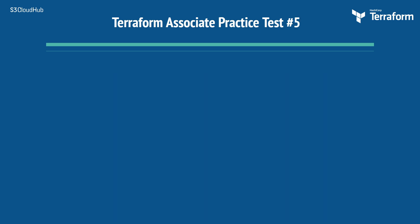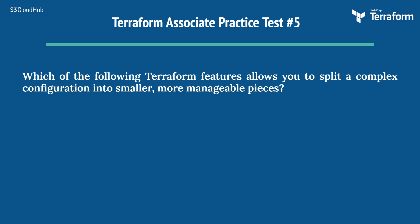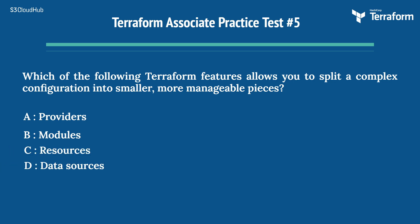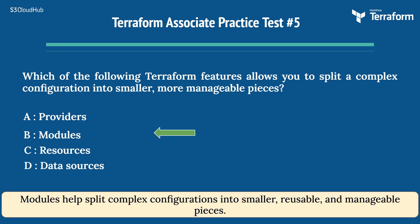The fifth question is: which of the following Terraform features allows you to split a complex configuration into smaller, more manageable pieces? Option A: providers. Option B: modules. Option C: resources. Option D: data sources. The right answer is Option B: modules. Modules help split complex configurations into smaller, reusable, and manageable pieces.